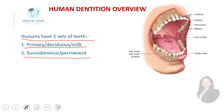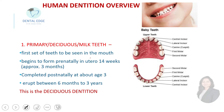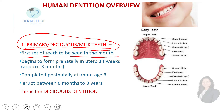Primary teeth, or deciduous teeth, also called milk teeth, are the first set of teeth to appear in the mouth. They begin to form prenatally, in utero, at approximately 14 weeks — about three months — when the child is still in the womb. Formation of deciduous teeth is completed postnatally at about three years of age.